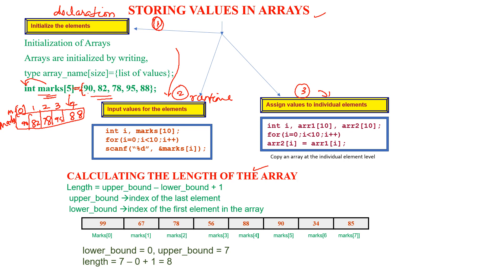The second method is inputting values for the elements during runtime — when you enter the value from the keyboard, you can store it in your array. For this you use a for loop, while loop, or do-while loop. For example, declaring int i and marks[10] where the size is 10: for i equal to 0, i less than 10, i++, since the index goes from 0 to 9. Using scanf with the format specifier %d, each entered value is stored in marks[i].